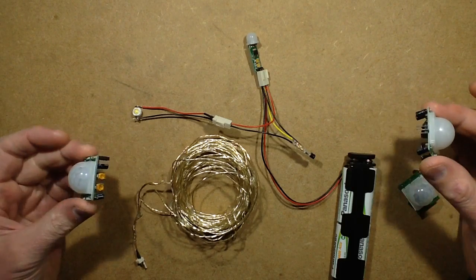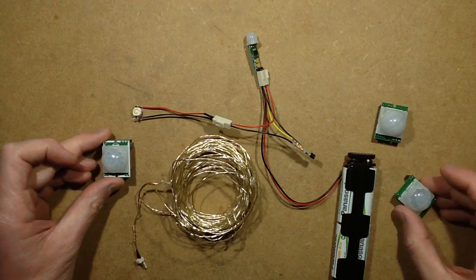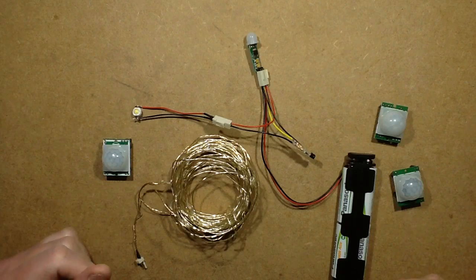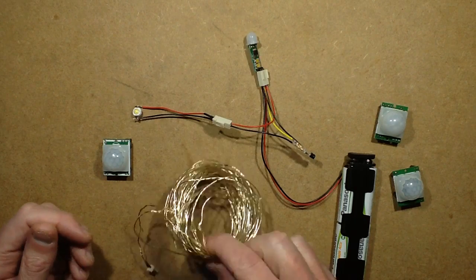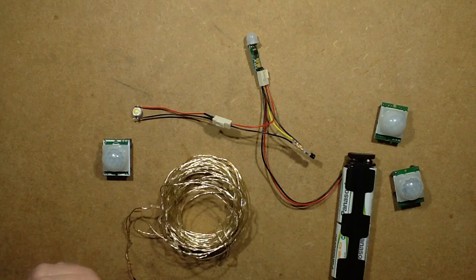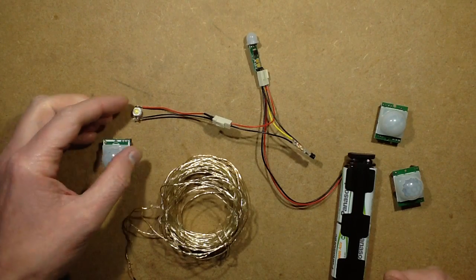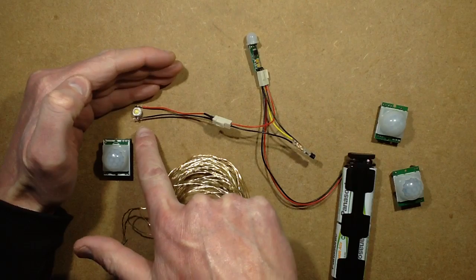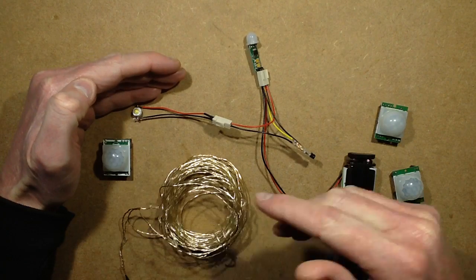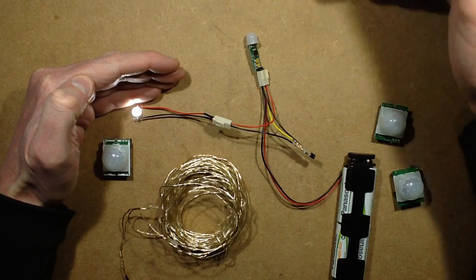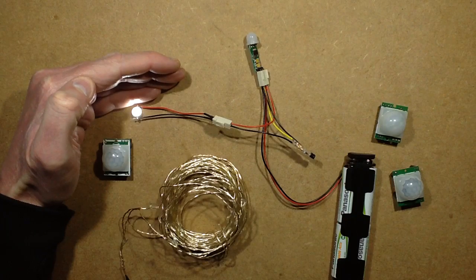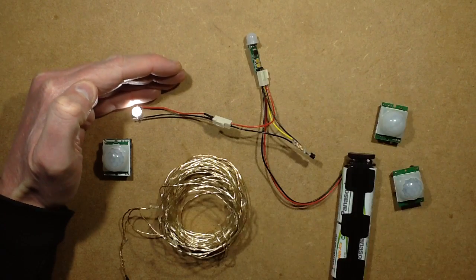This is where passive infrared detector modules come in handy, because it means you can have a battery-powered string of lights that will only come on when there's people actually in the vicinity to appreciate them. In this case I've got a large LED temporarily connected, and as soon as my hand goes in front of that sensor it will light and stay on for a while because it's using this little passive infrared module.